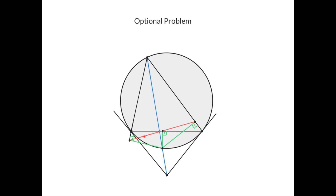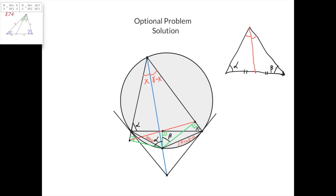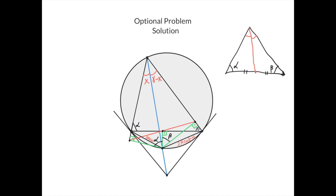Prove that this point is the midpoint of this red segment — in other words, prove that this length equals this length. A good thing to know about the median in a triangle with angles alpha and beta is that if you take the ratio of the sine of this angle divided by the sine of this angle, you get the ratio of sin alpha to sin beta. Just apply the law of sines to both sub-triangles and you'll see how the shared length cancels out, leaving sin alpha divided by sin beta.